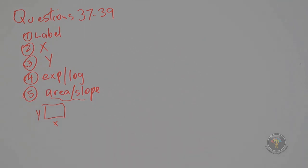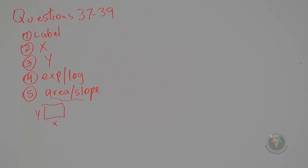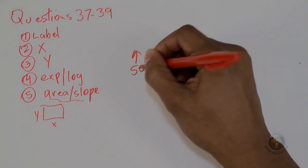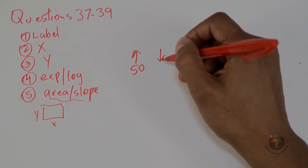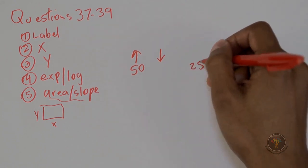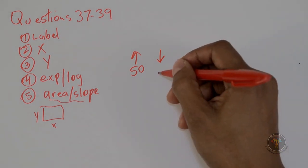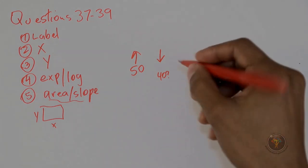After appreciating the graph, move on to question 38: which of the following is the best estimate for the difference in carbon dioxide partial pressures — and partial pressures for a gas are a means of expressing concentration — between oxygenated and venous blood? Looking at the carbon dioxide portion of the graph, low down we see an arrow going up from about 50, and an arrow going down somewhere between 25 and 50, more towards 50 — perhaps around 40.